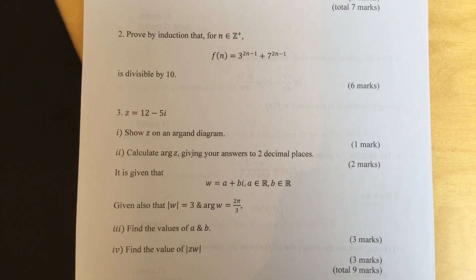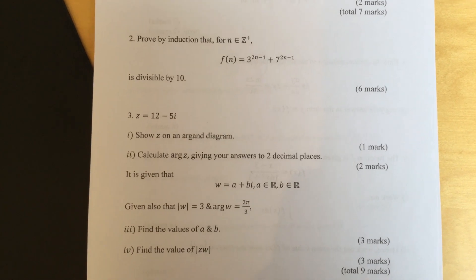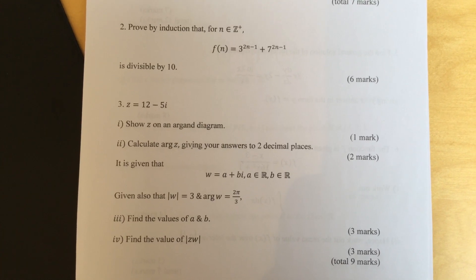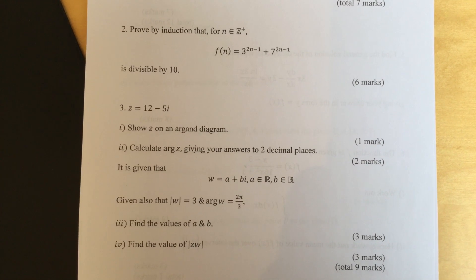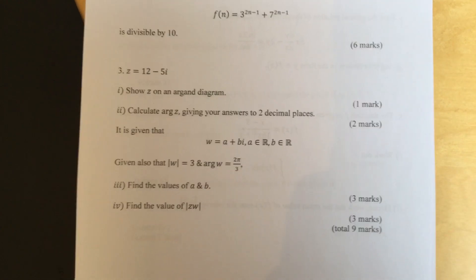It is given that w equals a plus bi, where a and b are real numbers. Given also that modulus of w is 3 and the argument of w is 2π over 3, find the values of a and b. Part four, find the value of modulus of zw.